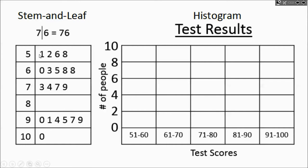61 to 70. It's just these four. 71 to 80. Well, it's just these four. There's nothing in the next row.